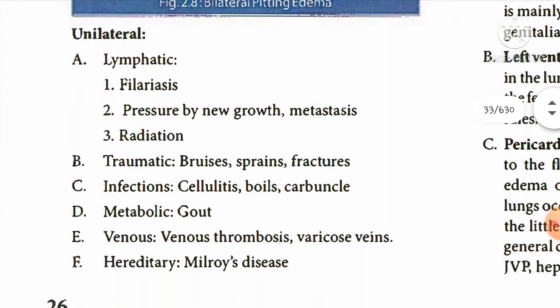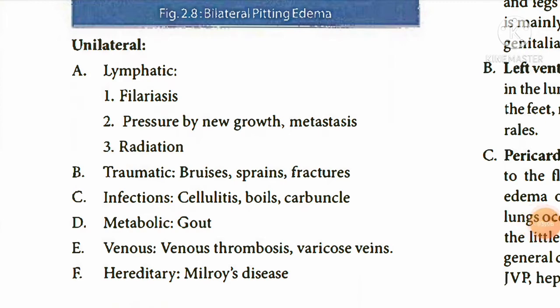The causes of unilateral edema: first is lymphatic — filariasis, also called elephantiasis. Pressure by new growth or metastasis. Radiation, traumatic bruises, sprains, and fractures. Infections such as cellulitis, boil, and carbuncle. Metabolic causes include gout, where uric acid accumulates. Venous causes include varicose veins and venous thrombosis. Hereditary causes include Milroy's disease.